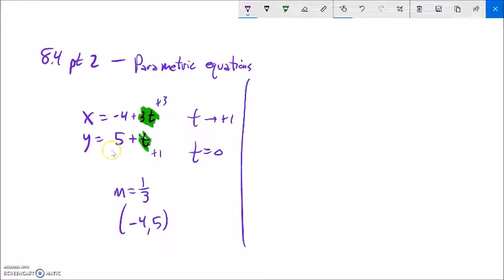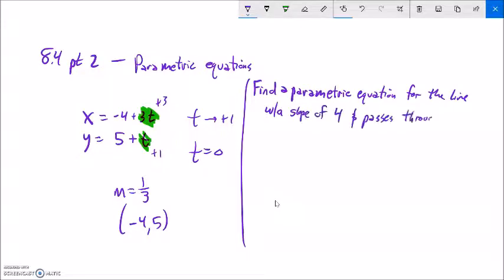Let's go the opposite direction and see if we can build up a parametric equation given a description. Find a parametric equation for the line with a slope of 4 that passes through the point (2, 6). I know that it passes through (2, 6), so x is 2 and y is 6. When t is 0, x is 2 and y is 6. I can almost think of that as a starting point.